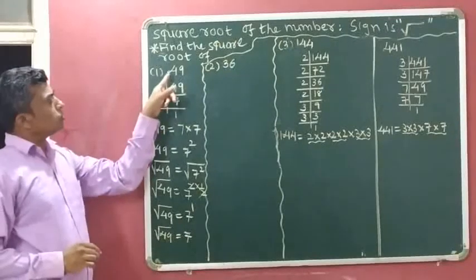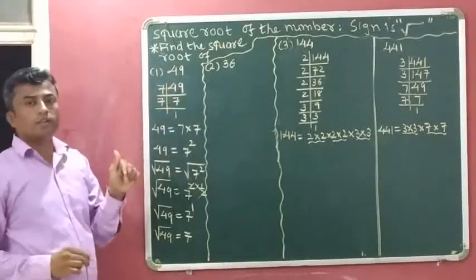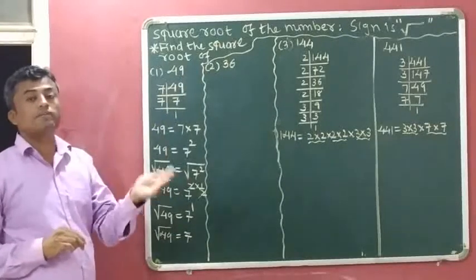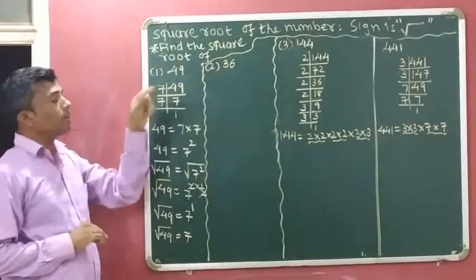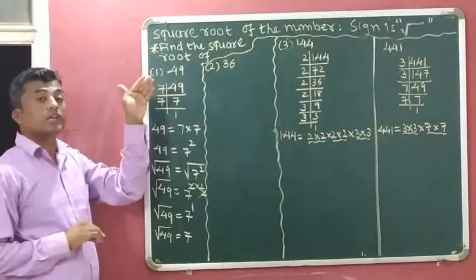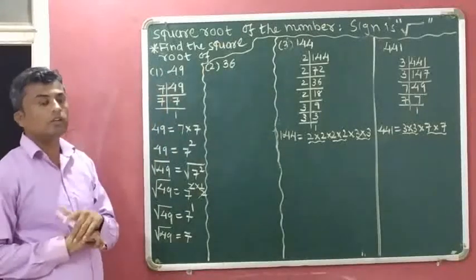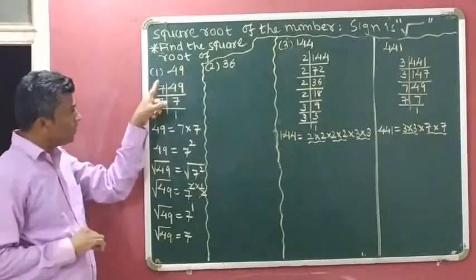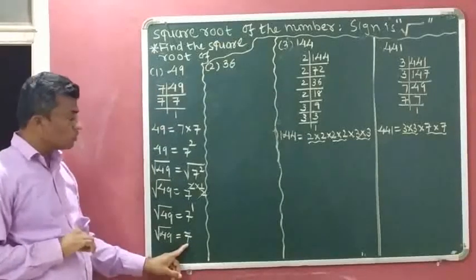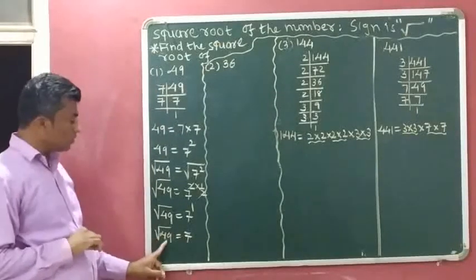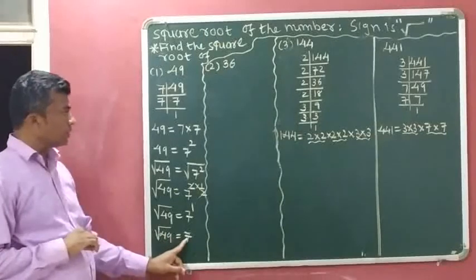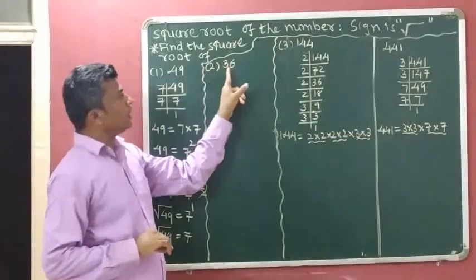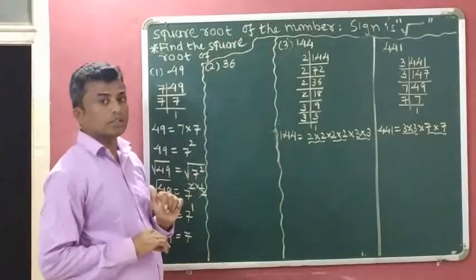To summarize: the square root of 49 using the normal method — which two same digits we can multiply to get 49 — is 7 times 7 equals 49, so the square root of 49 is 7. And with the regular prime factorization method, the answer is also 7. Next, we have to identify the square root of 36.